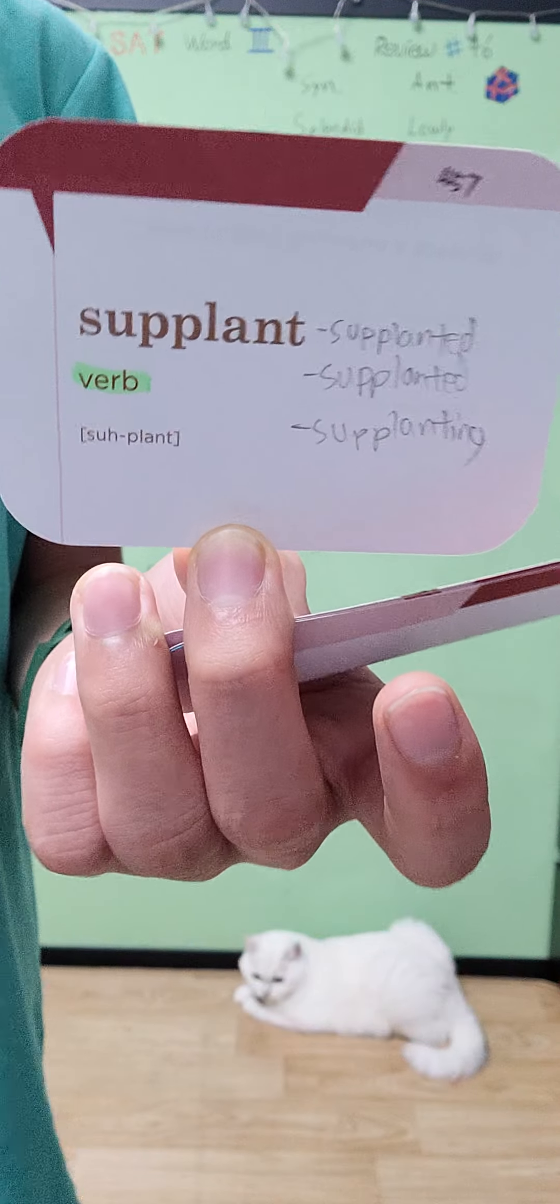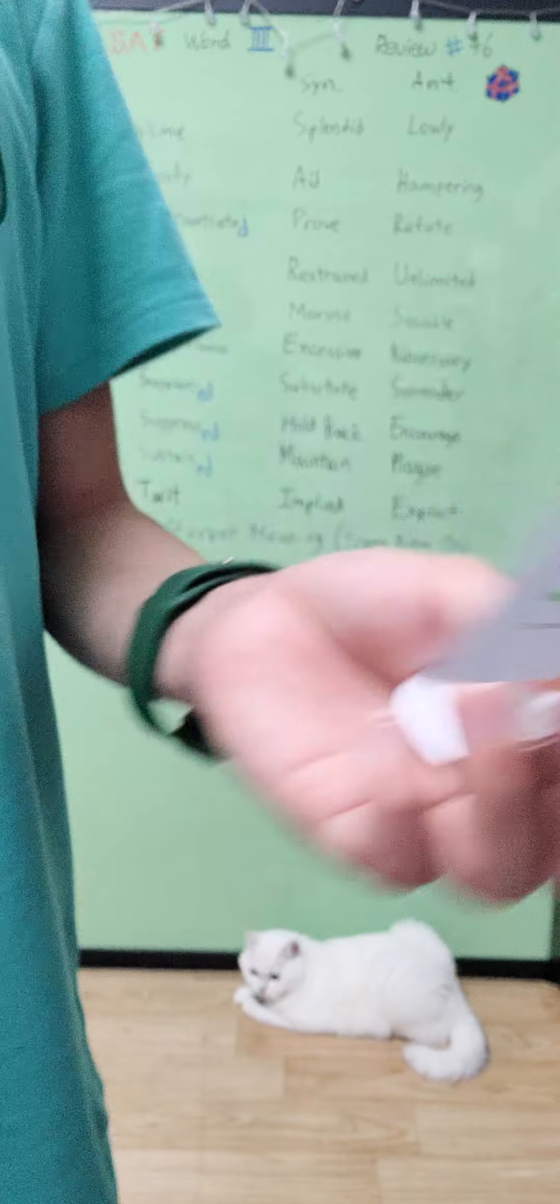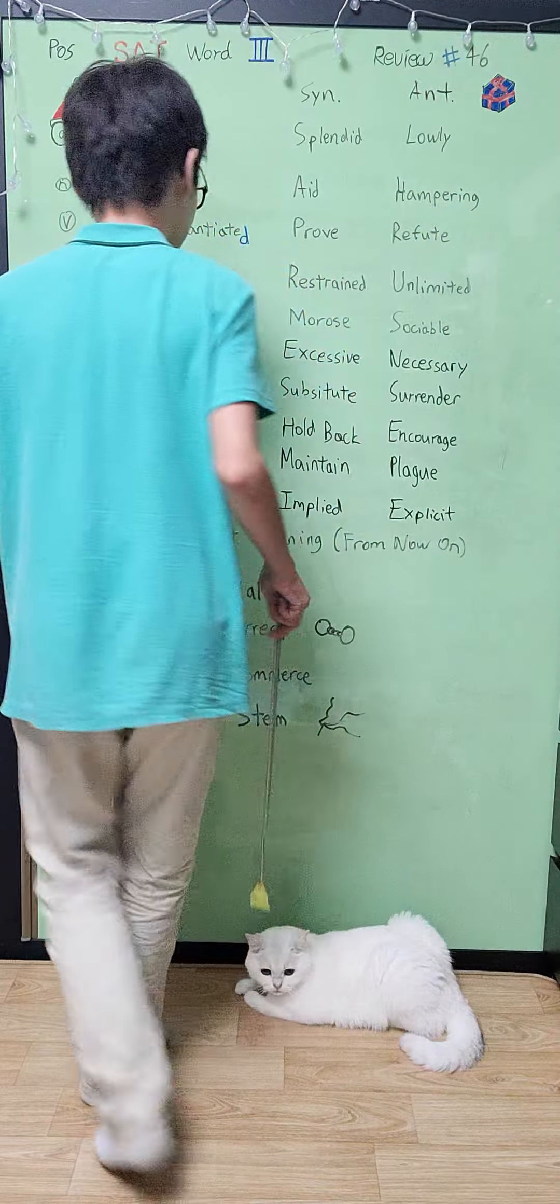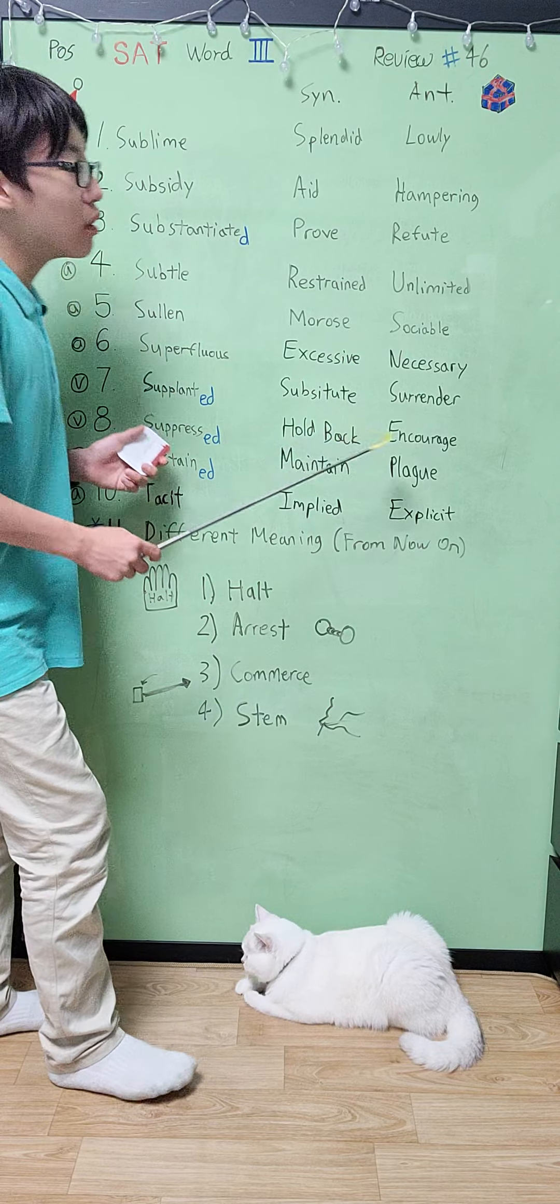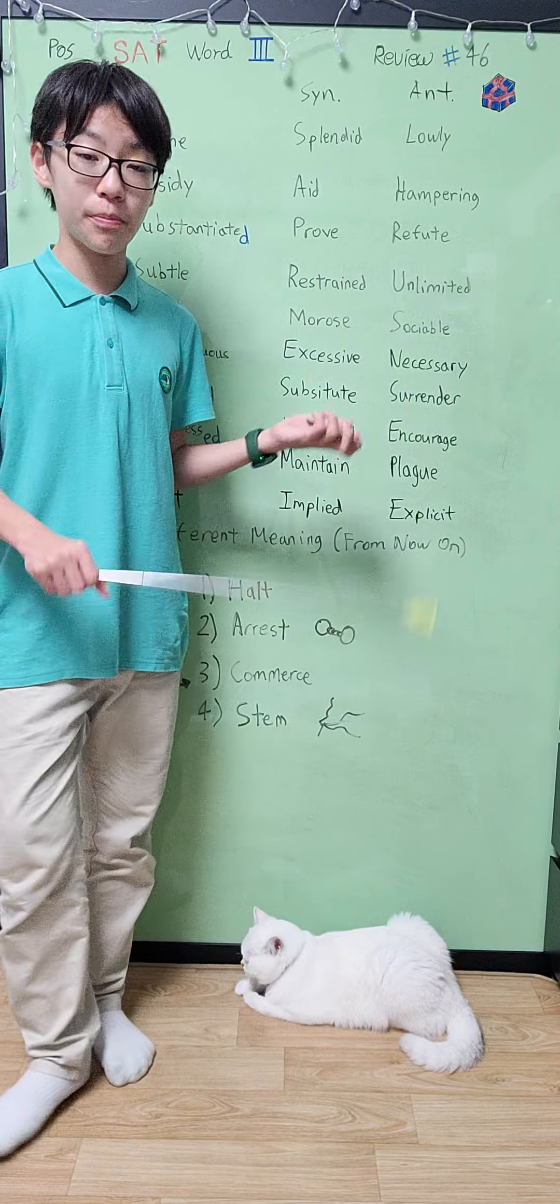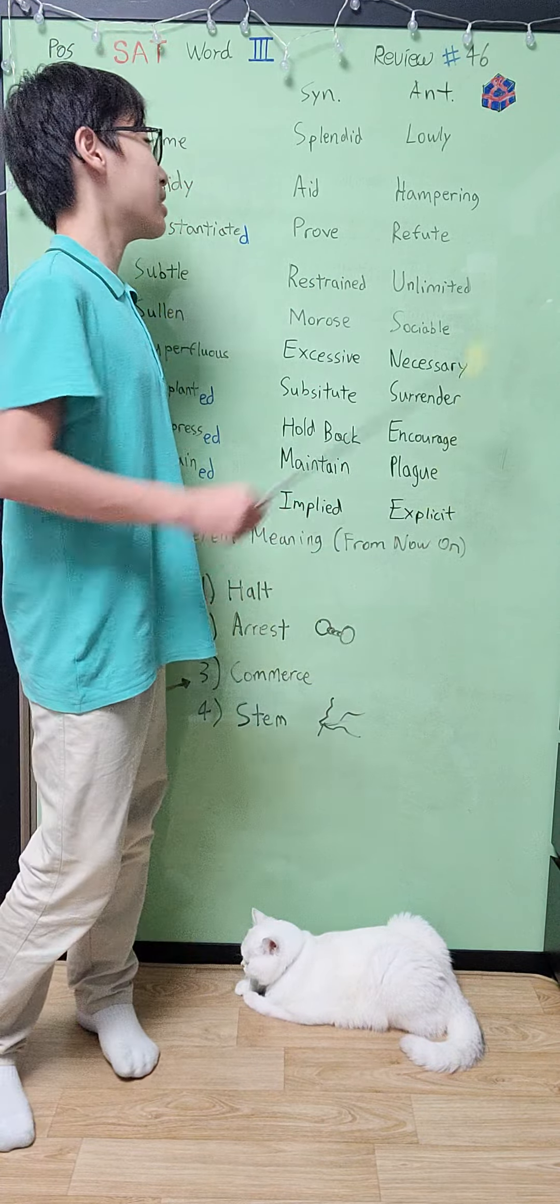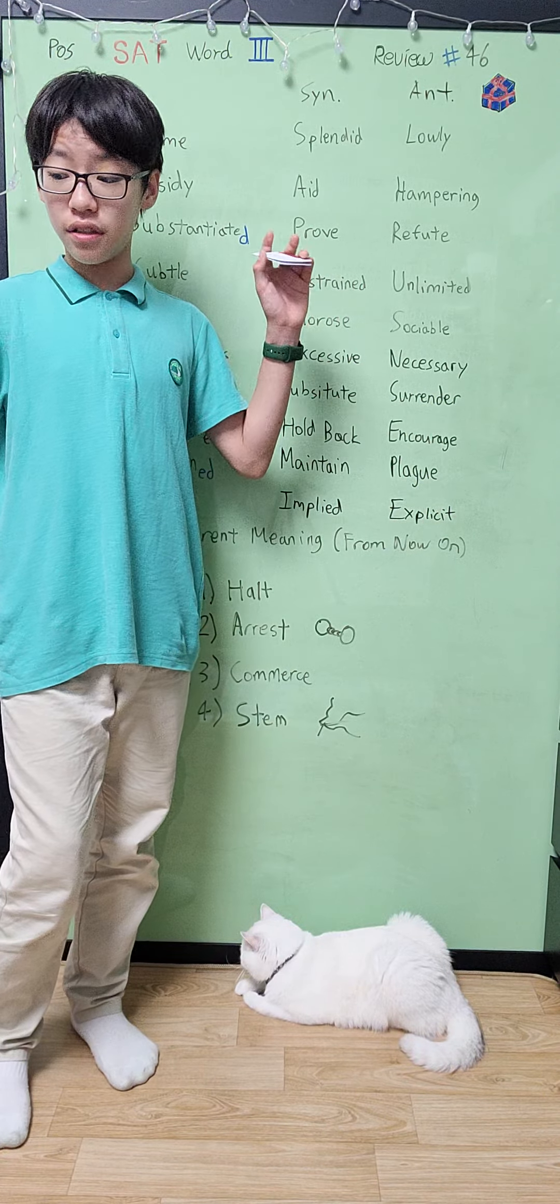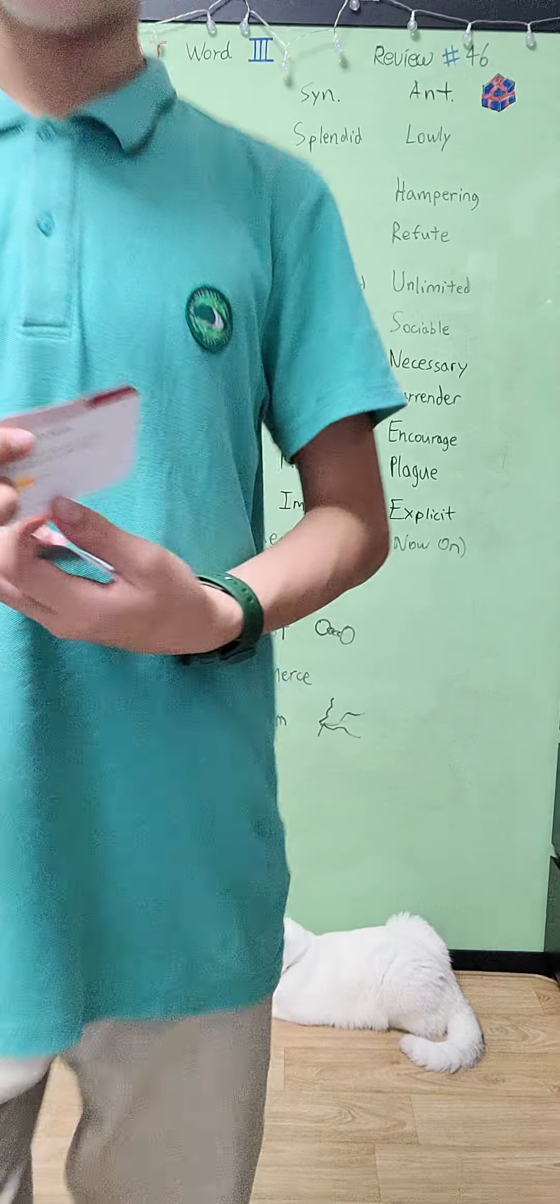And then our next word is to be supplant, which is a verb that basically means to replace one thing with another, or to basically substitute something, or to put something into a blank or like switch something around. And the antonym to that will be surrender, like I surrender by force.